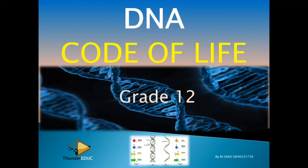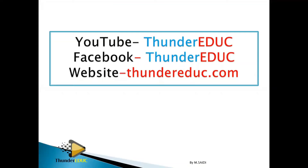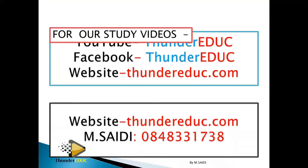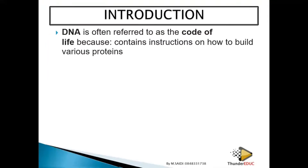Make sure you understand this topic because one topic links to another. If you don't understand one topic, the next topic will be a challenge. DNA is often referred to as the code of life because it contains instructions on how to build various proteins. Our body is made up of proteins, and what makes proteins is DNA — that's why we say DNA codes for life.